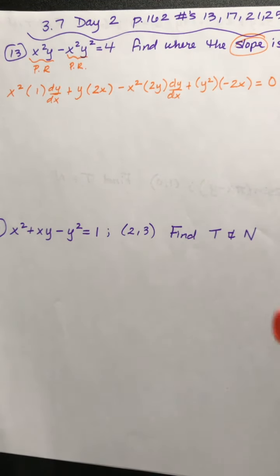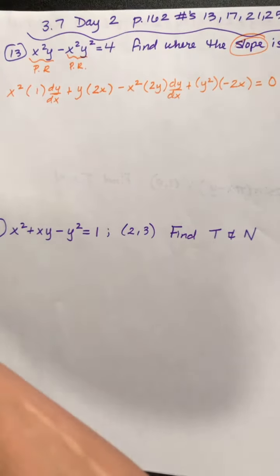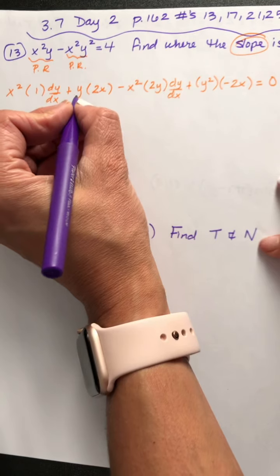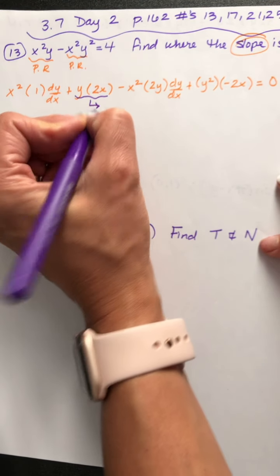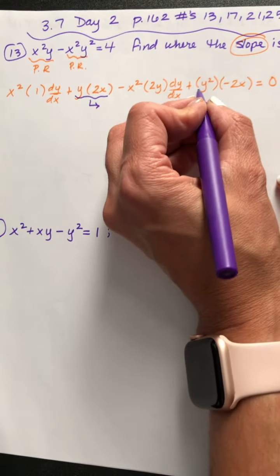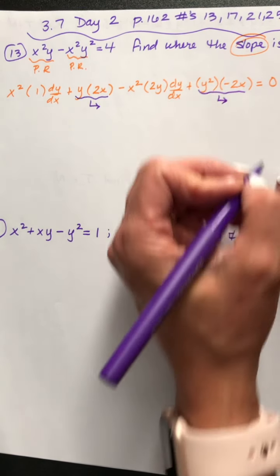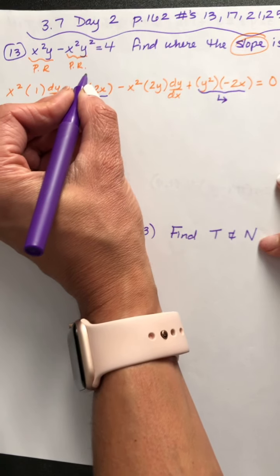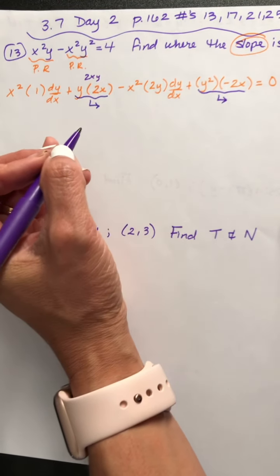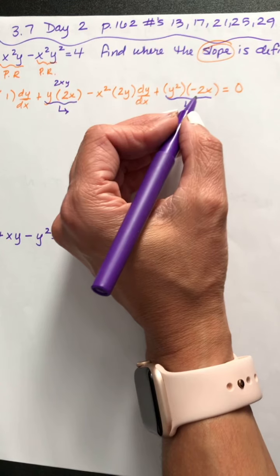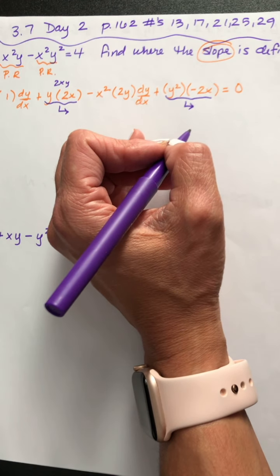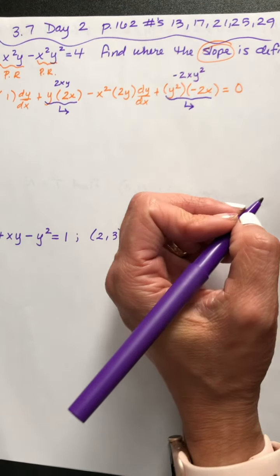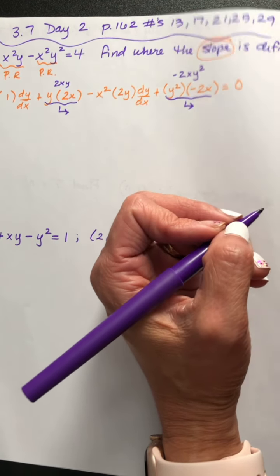Let's clean this up. Remember, we need to keep the dy dx's on the left, and move all other terms to the right. This term has dy dx; this one does not, so it moves to the right. y times 2x will be a 2xy that we'll subtract to the other side. y squared times negative 2x will be a negative 2xy squared that we'll add to the other side.